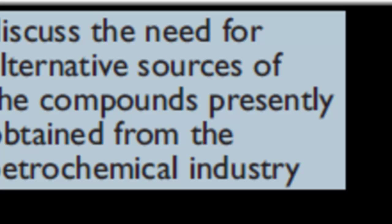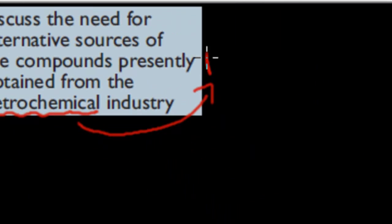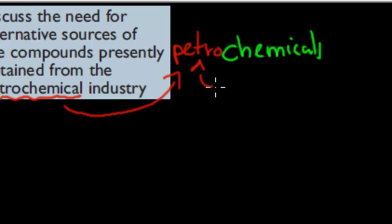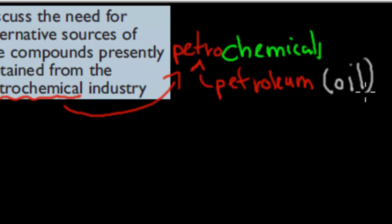Welcome back. In the last video we talked about cellulose and how cellulose has a basic carbon structure to allow us to make all the chemicals we currently make from petroleum. In this video we are going to cover the next dot point, which says: discuss the need for alternative sources of the compounds presently obtained from petrochemicals. Petrochemicals has two parts — petro, which is the same as petroleum, and chemicals. So that means all the actual chemicals we are currently making from petroleum, which is the same as oil. The syllabus dot point asks us why do we need to have an alternative source — something which is not the same as petrol.